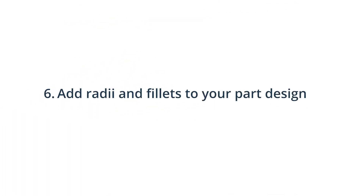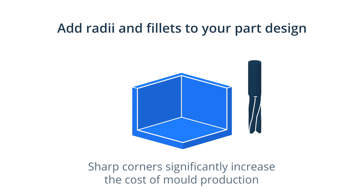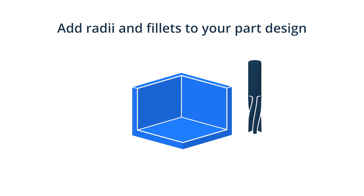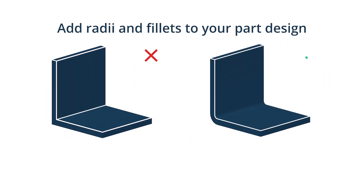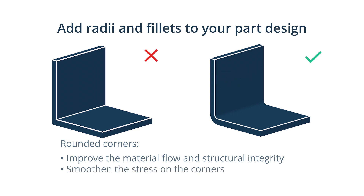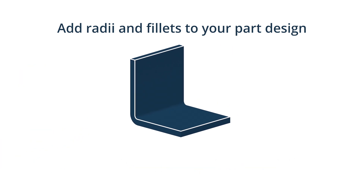Tip 6: Add radii and fillets to your part design. Since molds are CNC machined out of either aluminum or steel, sharp internal corners are difficult to create and significantly increase the cost of mold production. Sharp corners within the mold can also weaken the resulting part, as molten plastic is forced to flow across or fill a sharp corner. We recommend using your CAD system's filleting tool to add fillets and create smooth transitions between the walls and features of your parts — this will improve material flow, the part's structural integrity, distribute stress on the corner, and simplify part ejection. Add internal radii at least 0.5 times the thickness of the adjacent wall and external radii 1.5 times that size.